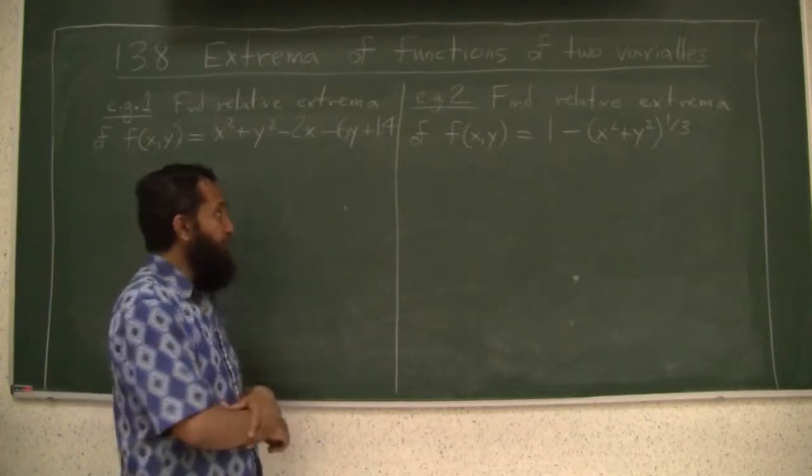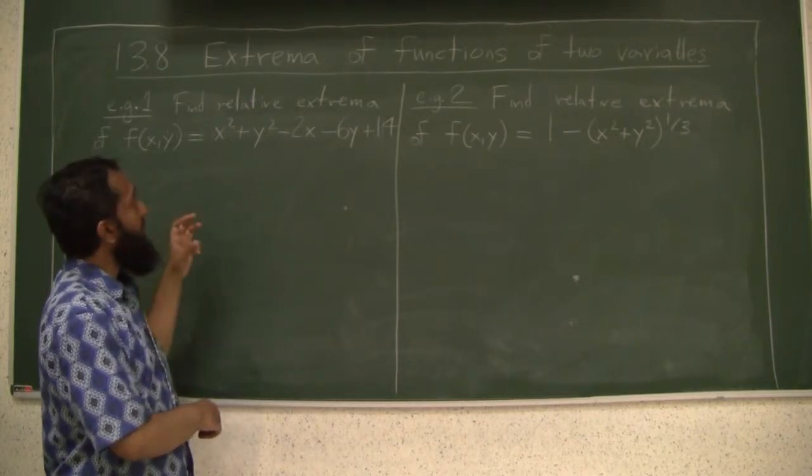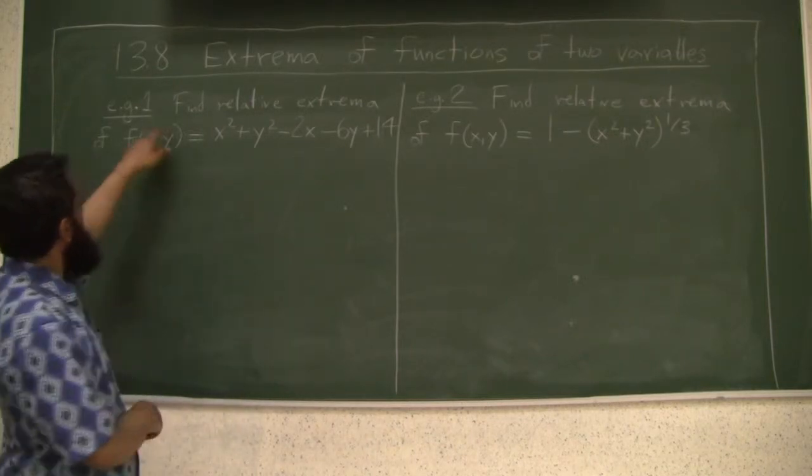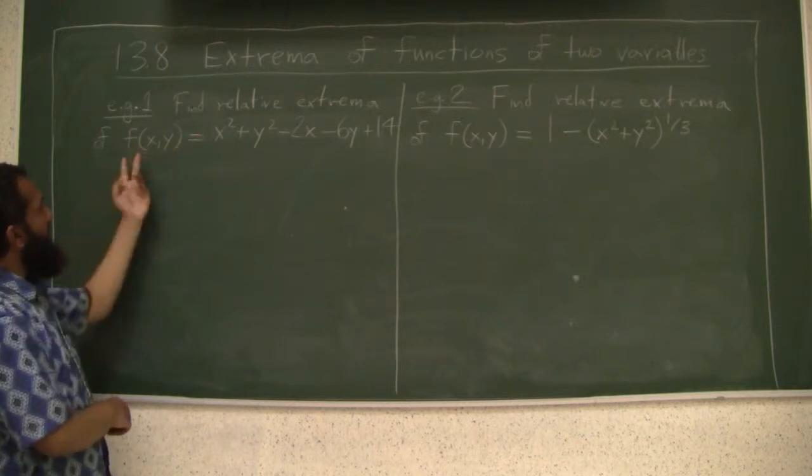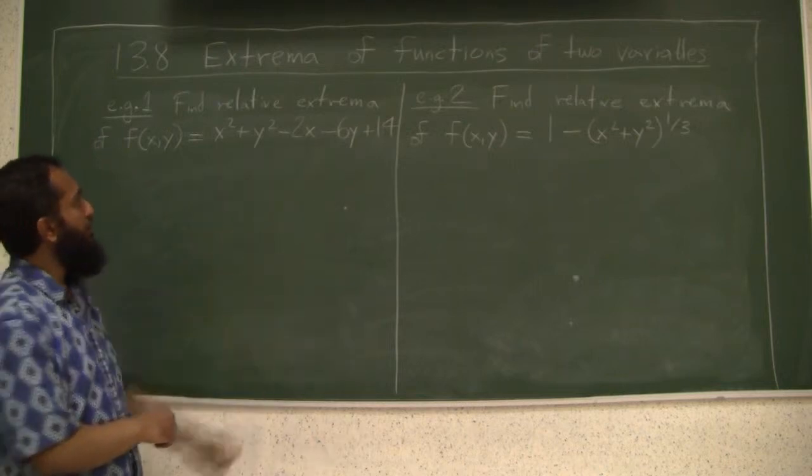Okay, let's do a few examples where we use our last theorem to find relative extrema of functions. So here is example number one: find relative extrema of this particular function, x squared y plus y squared minus 2x minus 6y plus 14.